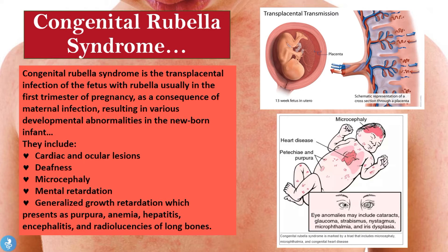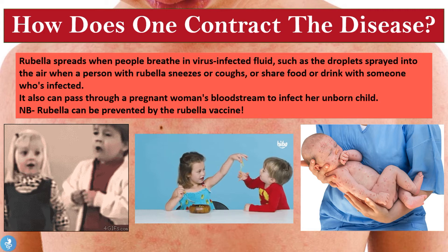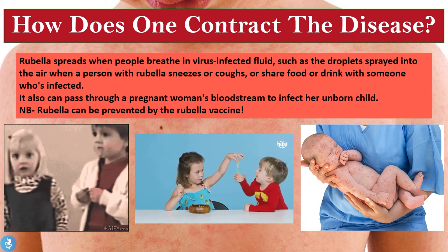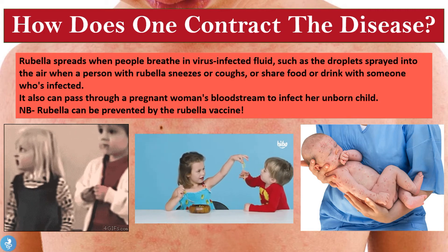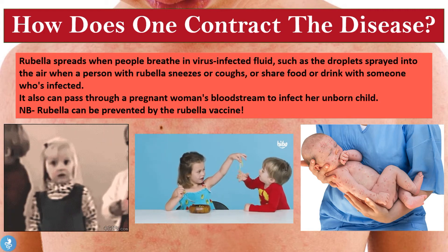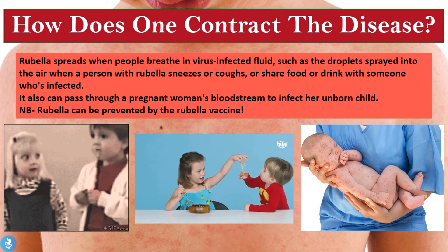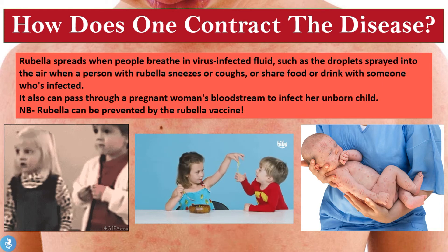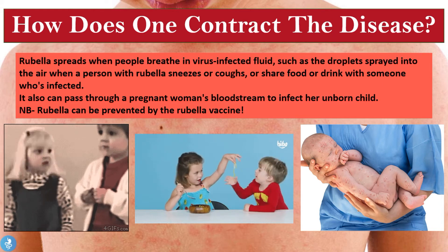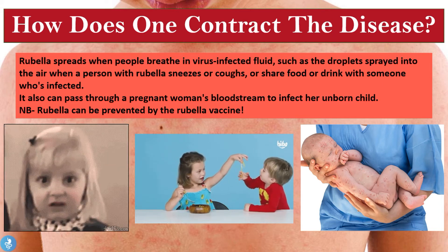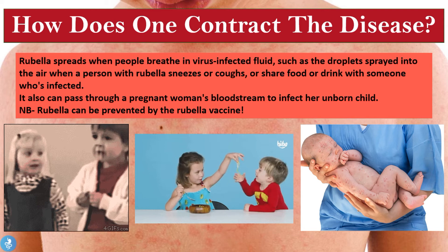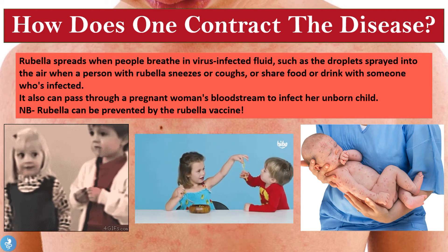Now that we know what congenital rubella syndrome is about, let's look at how one can contract this disease. Rubella spreads when people breathe in virus-infected fluid, such as the droplets sprayed into the air when a person with rubella sneezes or coughs, or shares food or drink with someone who's infected. It can also pass through a pregnant woman's bloodstream to infect her unborn child.